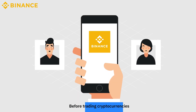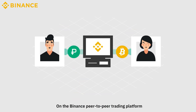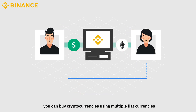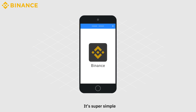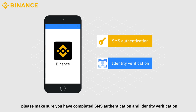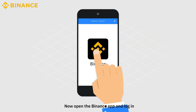Before trading cryptocurrencies, you need to buy cryptocurrencies first. On the Binance Peer-to-Peer Trading Platform, you can buy cryptocurrencies using multiple fiat currencies in various payment methods. It's super simple. Before we start, please make sure you have completed SMS authentication and identity verification. Now open the Binance app and log in.